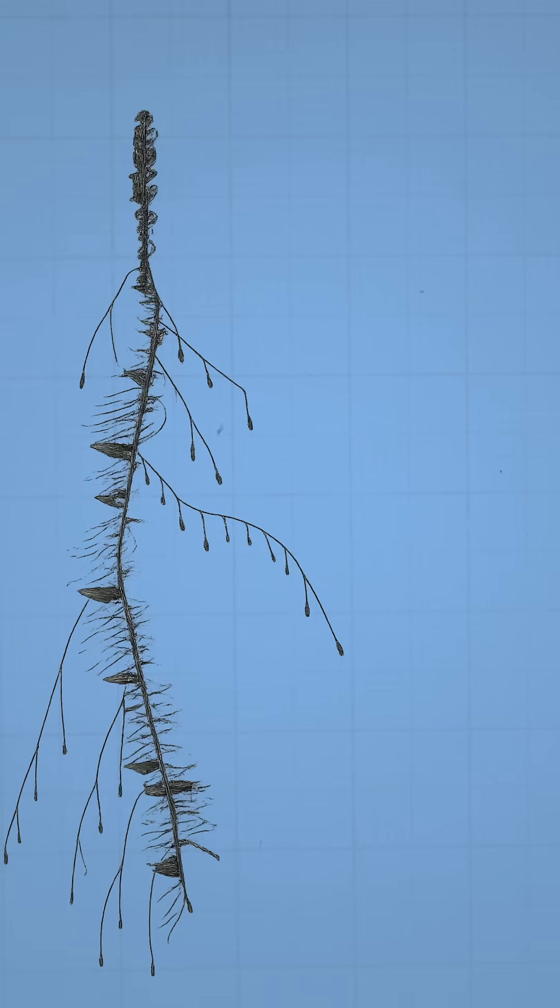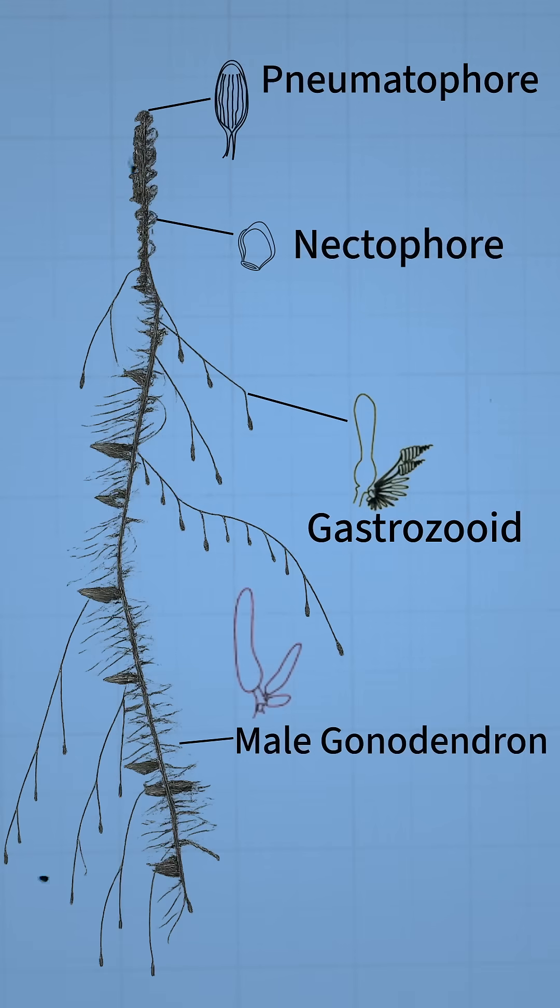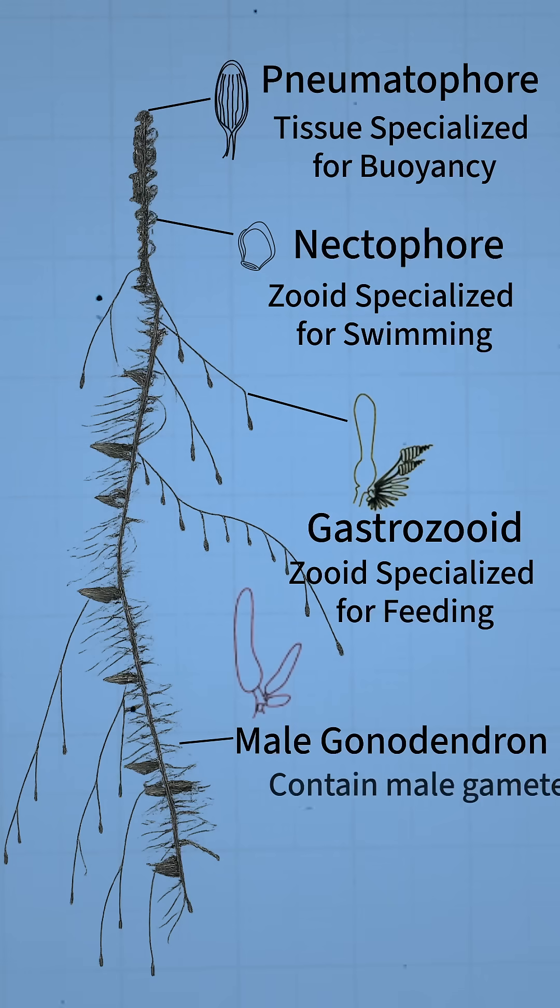It forms long, thin colonies made of individual zooids that bud from a single fertilized egg and specialize for tasks such as feeding, defense, buoyancy, locomotion, or reproduction.